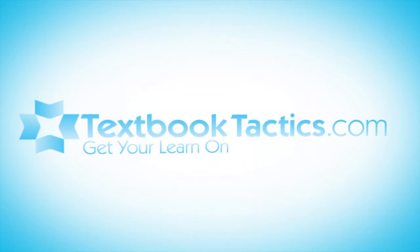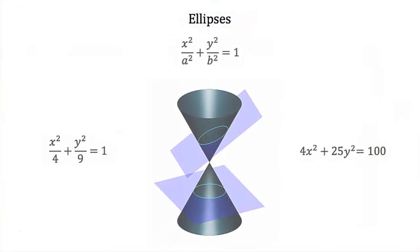This is a tutorial on ellipses as conic sections. When we create a conic section shaped like an ellipse, we get it when our intersecting plane cuts through our double cone at such an angle that when we look down at our plane, we have this stretched circle at the intersection of these two shapes. This stretched circle is an ellipse.